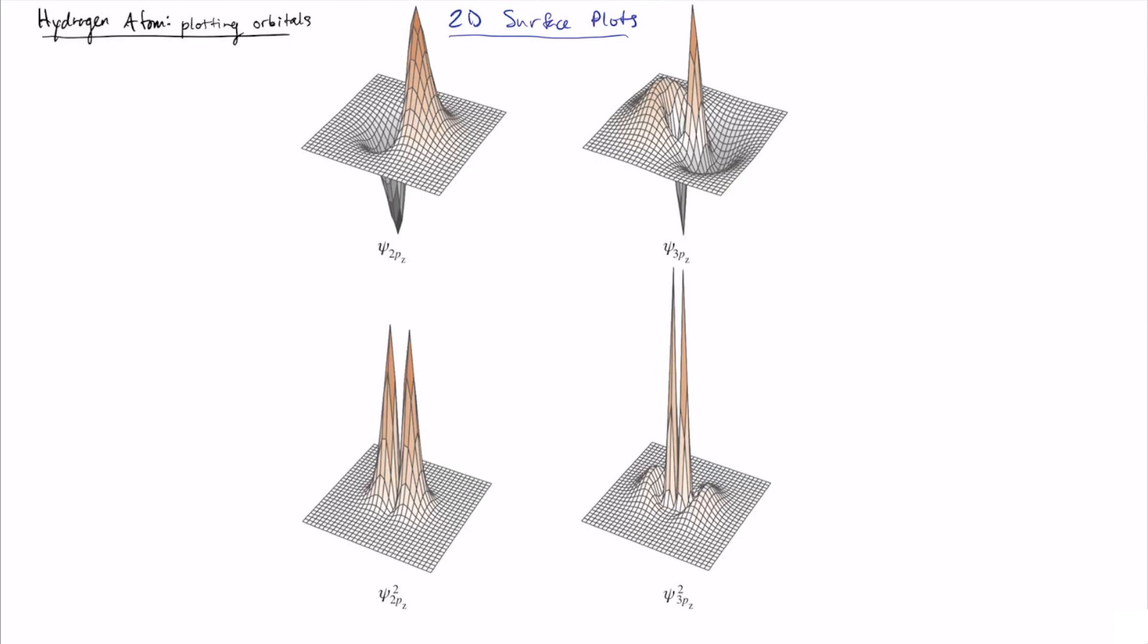In this case, we're effectively taking a slice along the Z and Y axis. So this is a slice of the YZ plane. Or another way to think about this is that what we're plotting is psi 2pz of 0, so x is equal to 0, and then Y and Z. Or similar for psi 3pz or those functions squared.